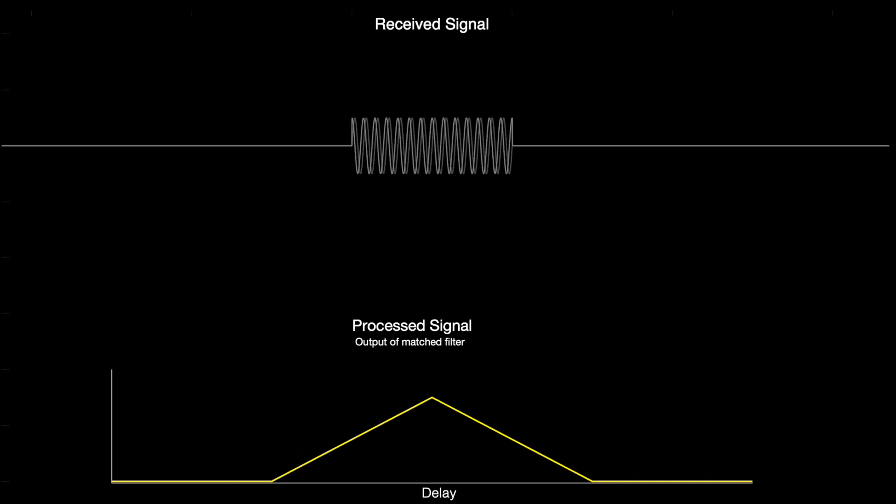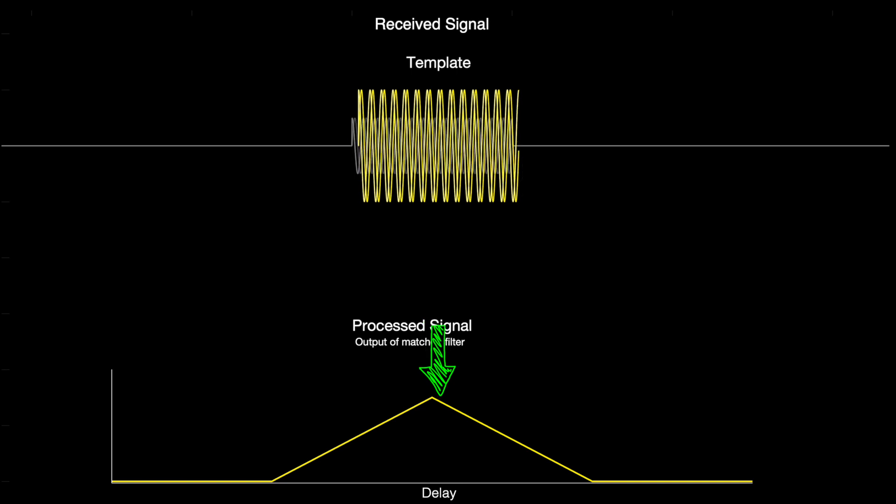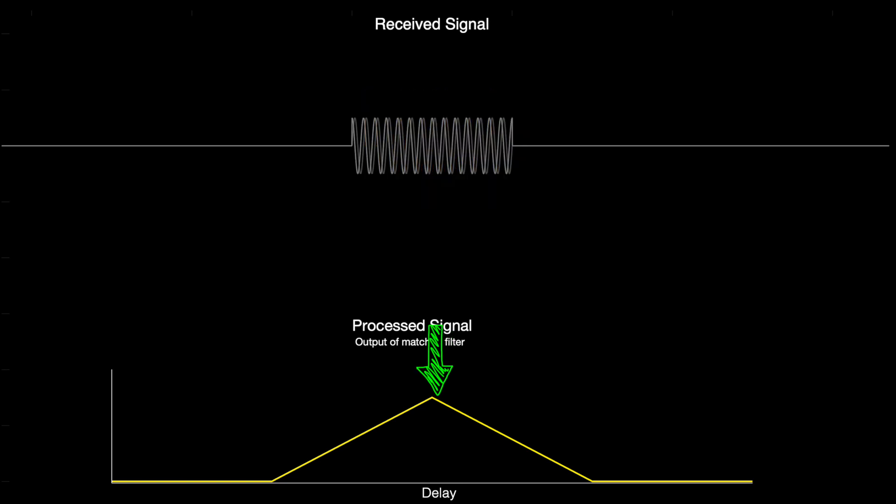With the rectangular waveform, the strongest correlation comes when the template lines up with the echo pulse perfectly. However, if we move the template just slightly to before the pulse, there's still a rather strong correlation. Since most of the template still overlaps the pulse, and the part that does overlap is perfectly correlated. This produces a processed signal that has a peak, which we know is good, but it's a rather shallow triangle.